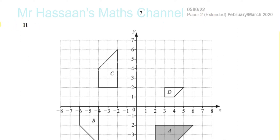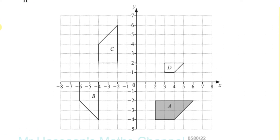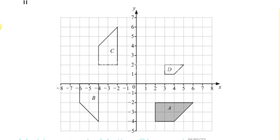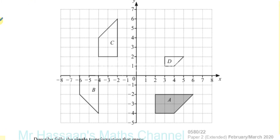This question, question number 11, is about transformations. This is a topic that has changed quite a lot in the new syllabus — they have taken out things like transformation matrices. The whole topic of matrices has been removed, and shear and stretch were taken out previously as well. So now we've only got translations, reflections, rotations, and enlargements in the syllabus — it's become a bit more basic.